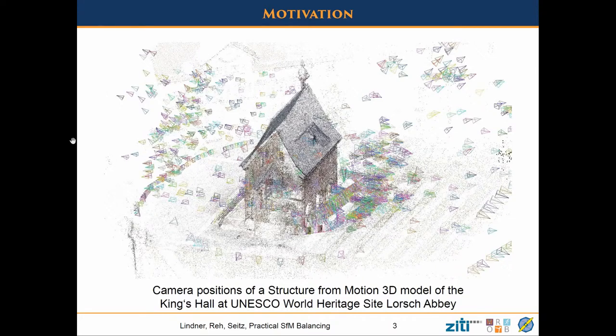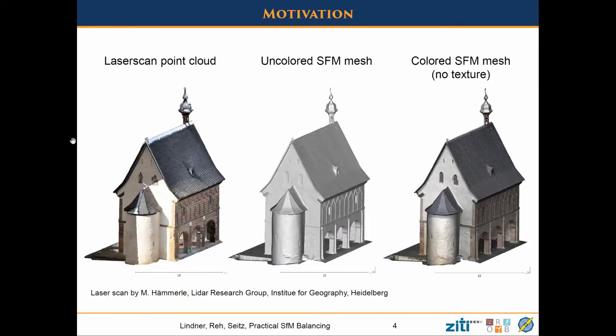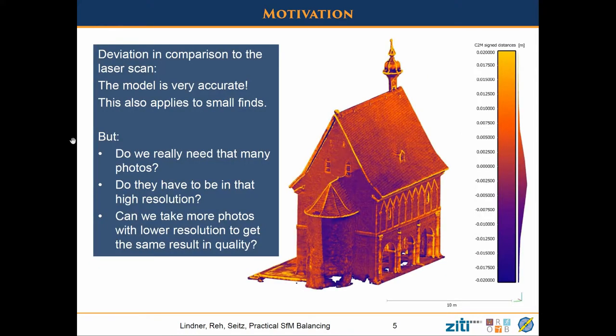We can assume that everyone knows about structure from motion, which is: we take a lot of pictures and then we get something in 3D out of it. Here for example we have the King's Hall in Lorge as a visualization reconstructed from many pictures. We also have a real lidar laser scan which we can compare to our reconstruction, and we can evaluate how precise it is — in this case the yellow or dark blue parts are about two centimeters inaccurate.